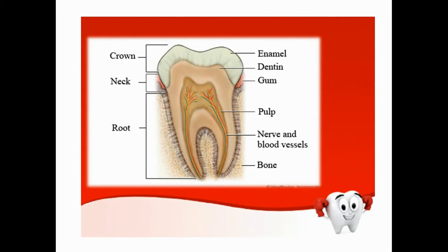Let's start with our main subject. This is how the tooth looks like. The part of the tooth that we can actually see in our mouth is the crown of the tooth. Then we have the neck and the root of the tooth — we cannot see the neck and root except if we have some pathology in our mouth, but this shouldn't happen.